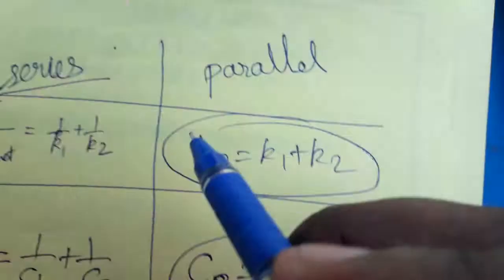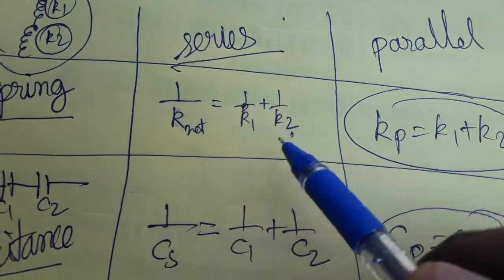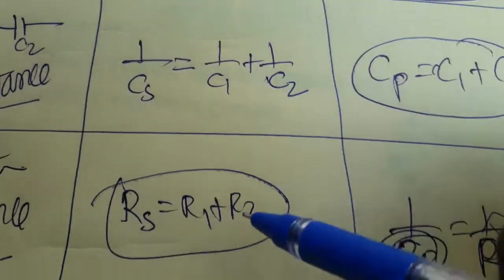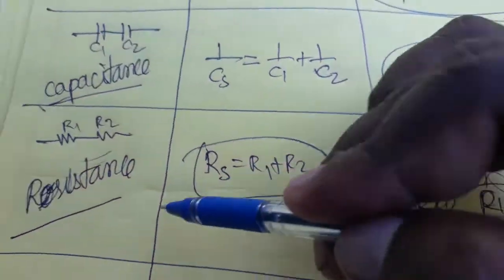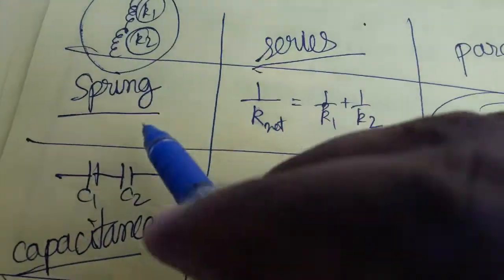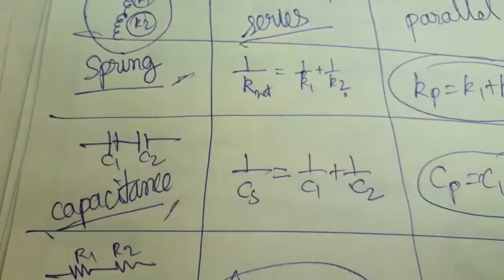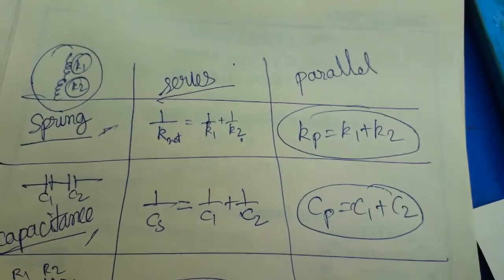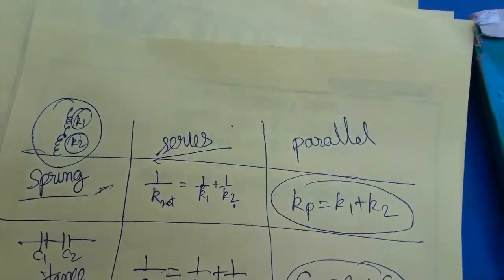So to summarize: in series, spring and capacitance are in the denominator form, while resistance is in the numerator. In parallel it is opposite — resistance takes the denominator form, while spring and capacitance are added directly. This technique is easy to help you in competitive exams. Thank you.